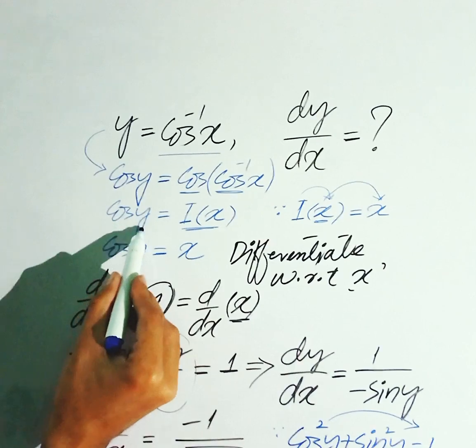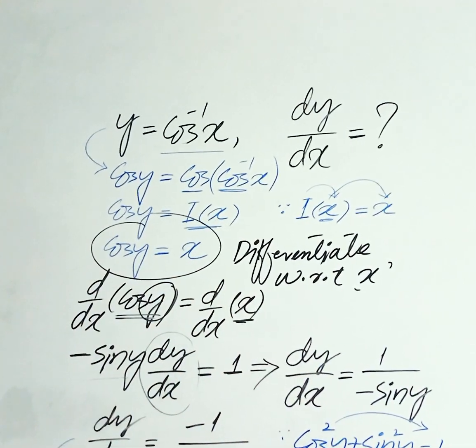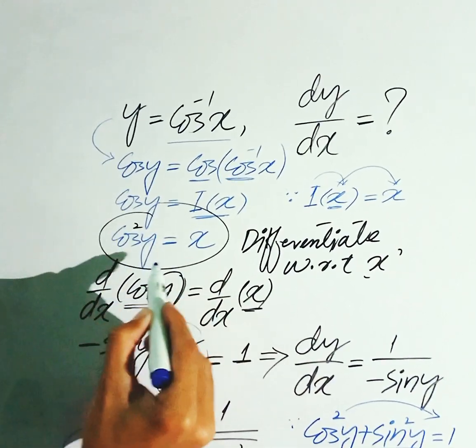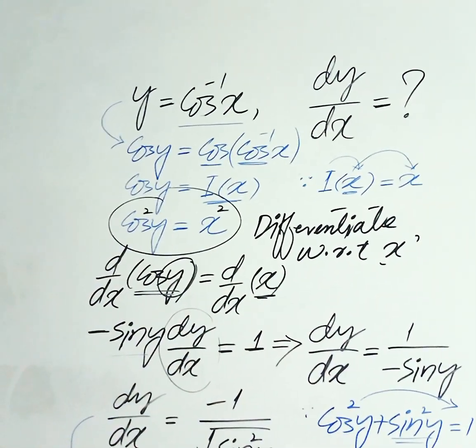Hama, apne start me ye kaha tha ka jay, cos y jay hai, woh x ke berabar hai, toh agar square liya jayai both side. So yahan se banekha, cos square y equal to x square.